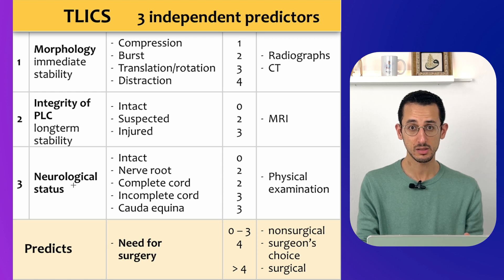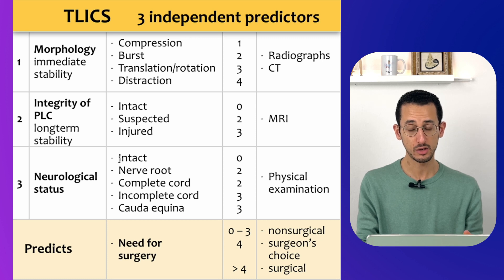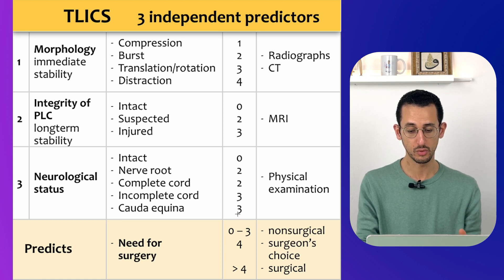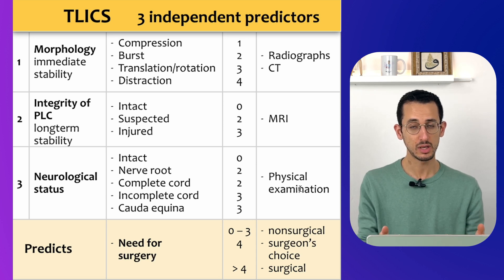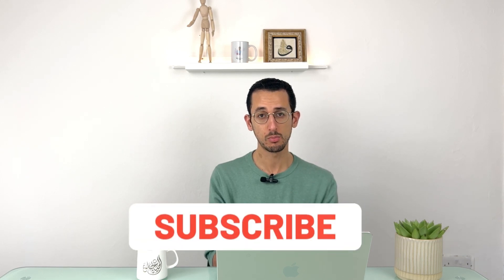Finally, you assess the patient's neurological status. If the patient is neurologically intact, has nerve root symptoms, a complete cord injury, incomplete cord injury, or cauda equina, you give them a score from zero to three, and that relies on your physical examination. You then get the total score and decide on your surgical plan. I hope this simplifies the TLICS score and the way to describe the morphology of the fracture and how to look at posterior ligamentous complex injury.